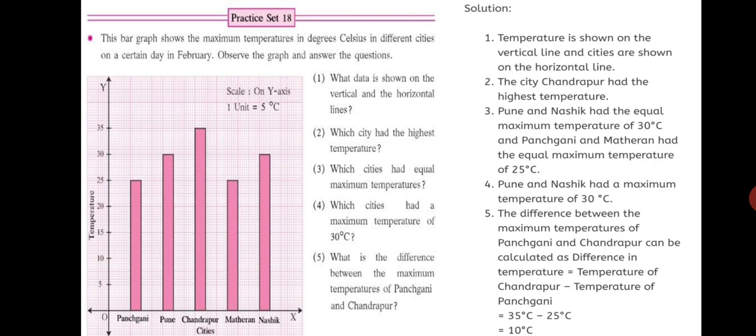Question number 3. Which cities had equal maximum temperatures? So, can you see any graphs equal? Yes. The first and the fourth one. So, go down. Have a look at the name of the cities. Panjgani and Mathiran. So, Panjgani and Mathiran have equal temperatures. Maximum. But the question is. Which cities had equal maximum temperatures? Equal. So, we have Panjgani and Mathiran. But we have to check out at the same time if there are other cities also which have equal. So, yes. One is 30 and the other one is also 30. Second and the fifth. That is Pune and Nashik. So, your answer will be. Pune and Nashik has the equal maximum temperature of 30 degree Celsius. And Panjgani and Mathiran had the equal maximum temperature of 25 degree Celsius.